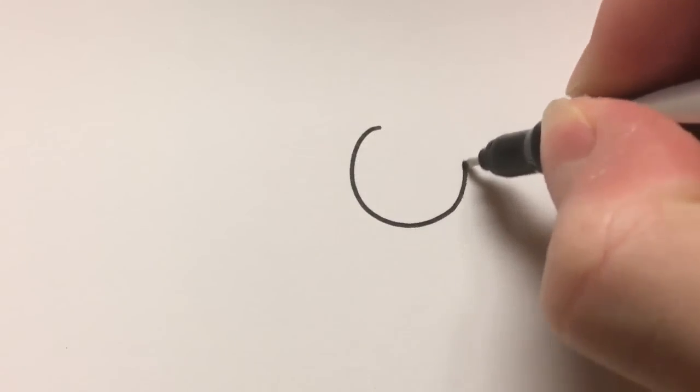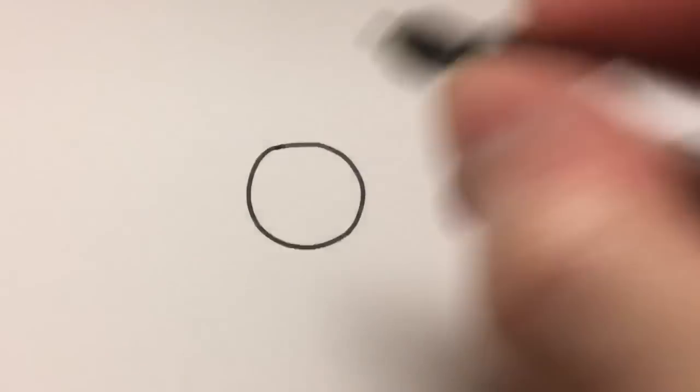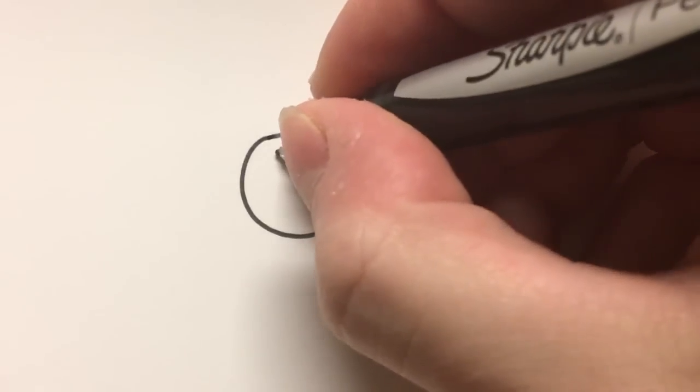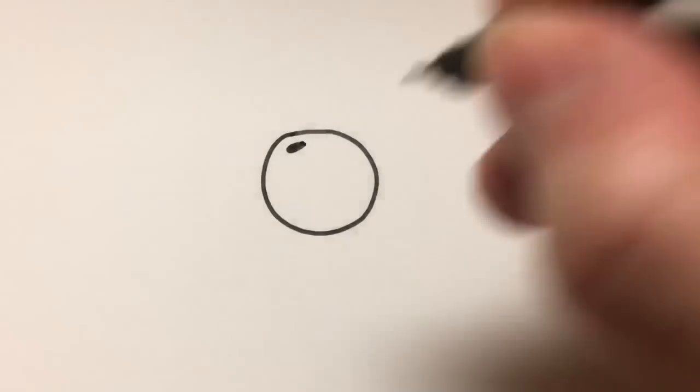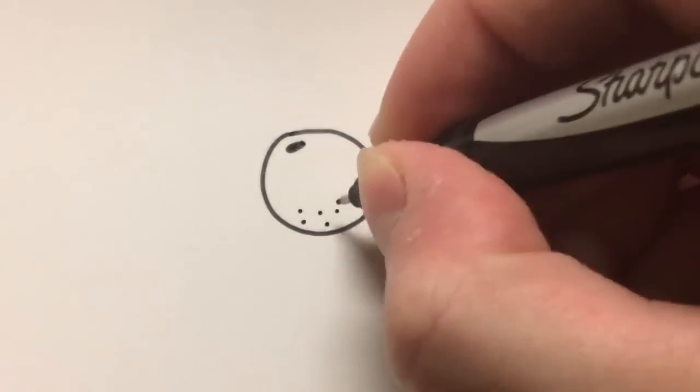First, I start by drawing a circle shape like that. Then I'm going to add a little black rectangle at the top for detail, and at the bottom I'm going to add...